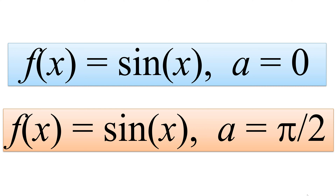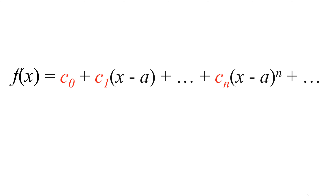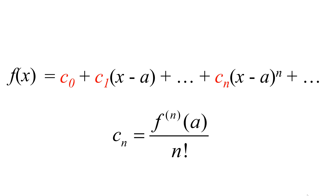To explain the constant A in Taylor series of a function, I have to start with the definition of Taylor series. Consider that we have a function f(x). The Taylor series of f(x) is an infinite sum of terms having the coefficient c_n multiplied by (x minus a) to the power of n. c_n is a coefficient related to the derivatives of f(x) at a point x equal to a, and a correction factor of factorial of n.